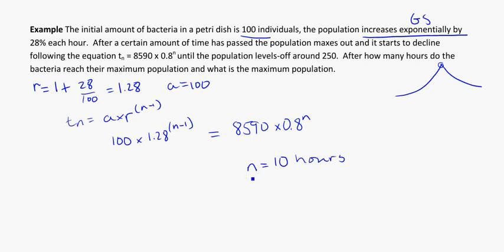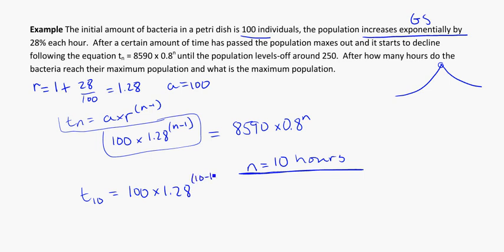After 10 hours it maxes out and begins to decline, so we've got that part done. But they want to know what's the actual maximum population. So we have to use this n and figure out that max. So again, I'm going to plug it back in to this first equation that we've written down for T10. And here I'm going to go 100 times 1.28 to the 10 minus 1. If we plug this into our calculator, T to the 10 is equal to 922.3 something. So we can round that basically to 922 bacteria.